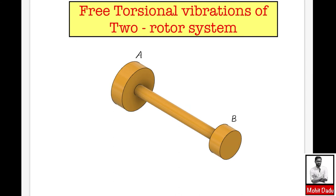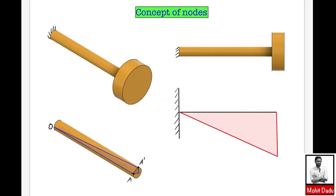To find the natural frequency of these torsional vibrations, we define something called a node. First we will see the concept of node with respect to a single rotor system, then move on to the two-rotor system analysis. In the single rotor system, a shaft carries a single rotor at one end with the other end fixed, and torsional vibrations occur when the disc is twisted and untwisted.